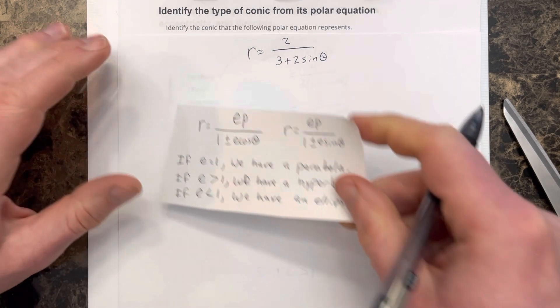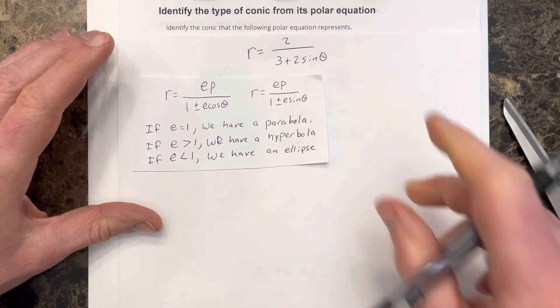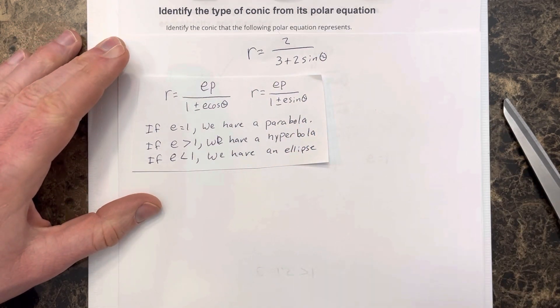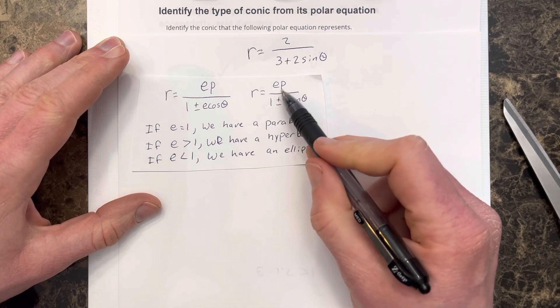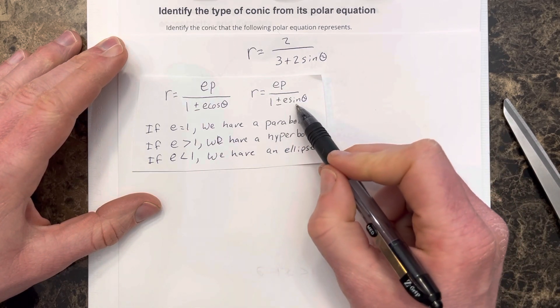So we have r equals 2 divided by 3 plus 2 sine theta. And we want to get it in the form of ep divided by 1 plus or minus e sine theta.